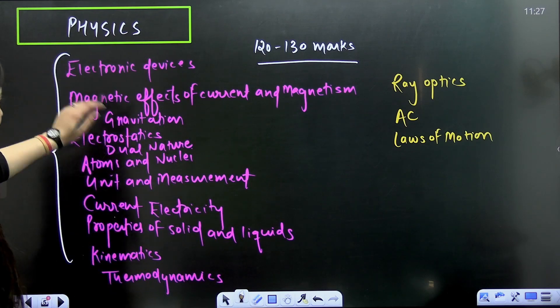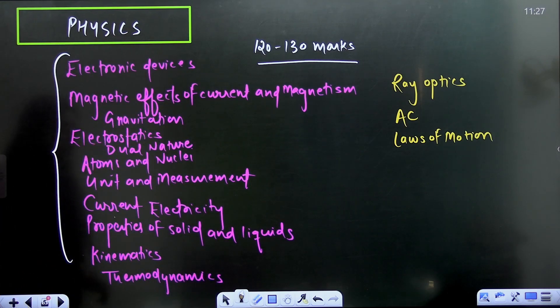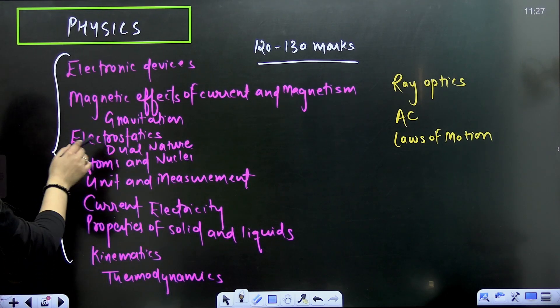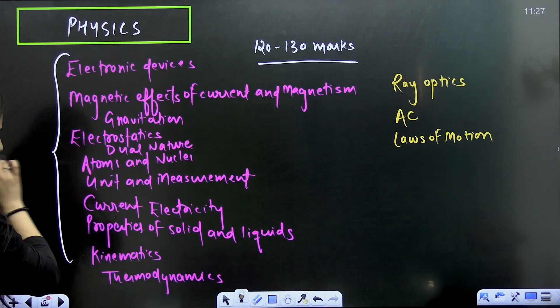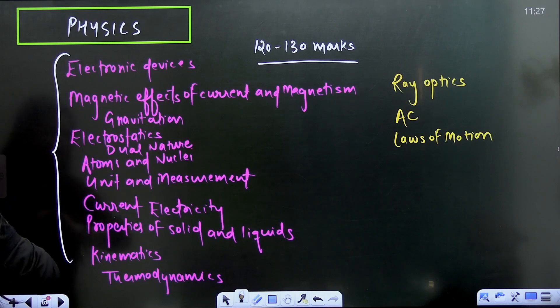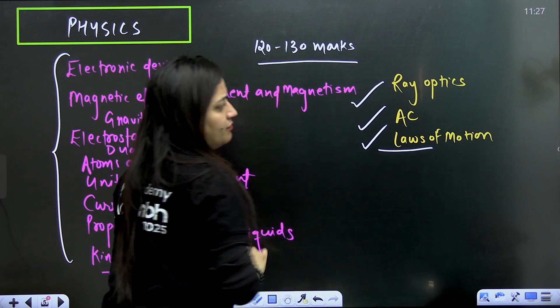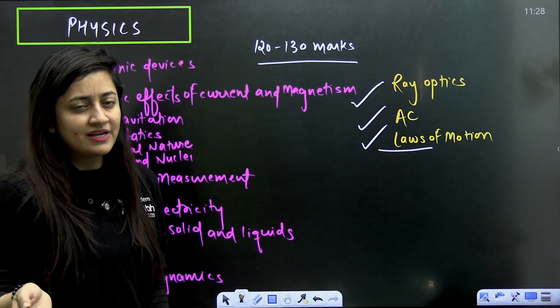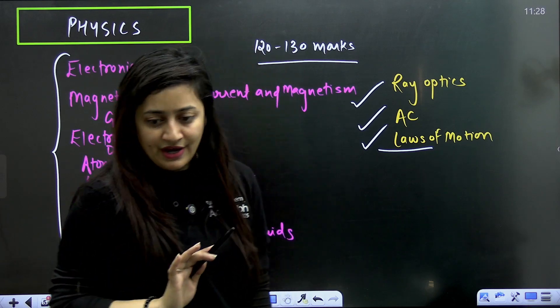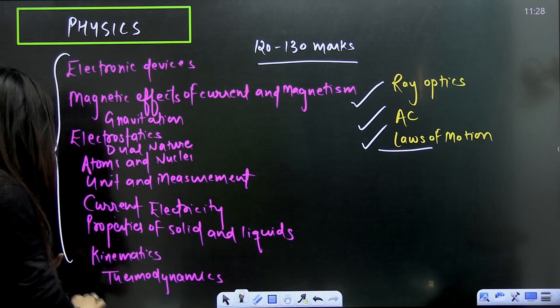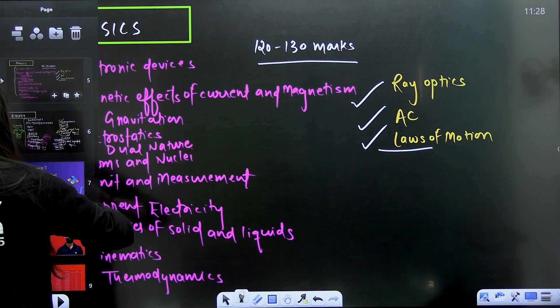Electronic devices, magnetic effects of current and magnetism, gravitation, electrostrat, dual nature, atoms and nuclei, unit and measurement, current electricity, properties of solid and liquid, kinematics, thermodynamics, ray optics, alternative current and laws of motion. From wave optics also two questions can come, but if that part is strong, then only touch that. So this is the list. These are the chapters that you need to complete.